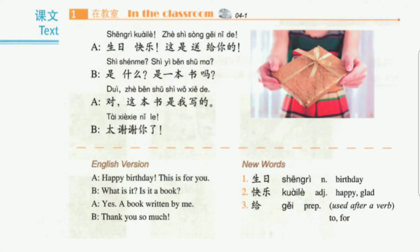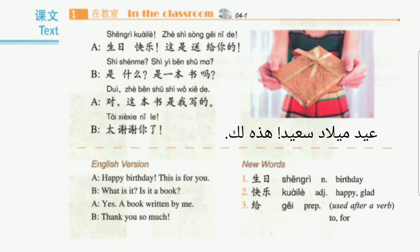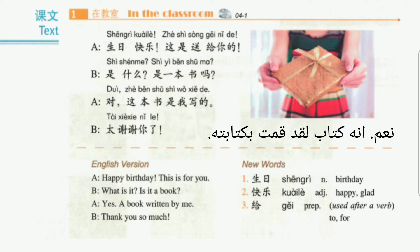课文 1 在教室 Text 1: In the Classroom. 生日快乐，这是送给你的。是什么？是一本书吗？对，这本书是我写的。太谢谢你了。